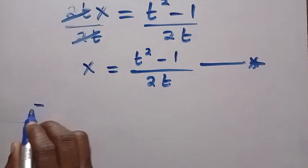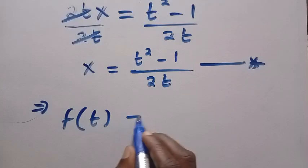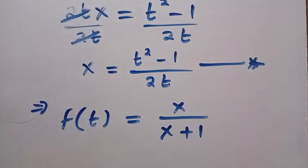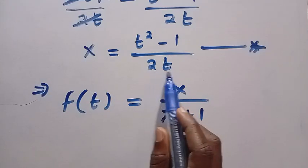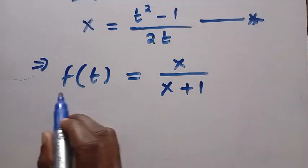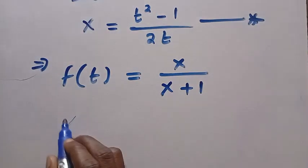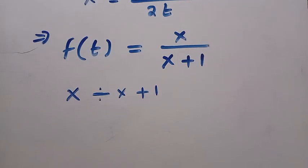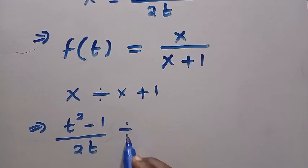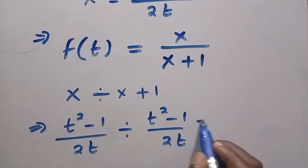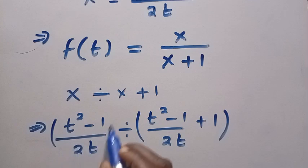Let's go back to the formula. The formula implies we have the function f of t equals x divided by x plus 1. We have our x already, which is t squared minus 1 over 2t. By replacing every single x here with what we have, we can write x divided by x plus 1, where the first x is t squared minus 1 divided by 2t, and the denominator is t squared minus 1 divided by 2t, plus 1 — we put each part in brackets.